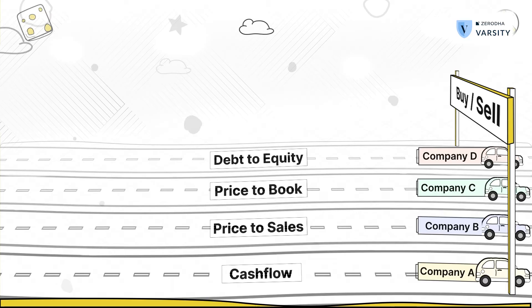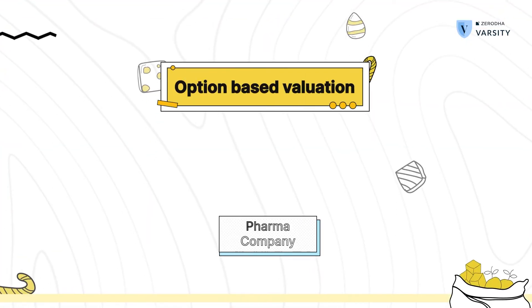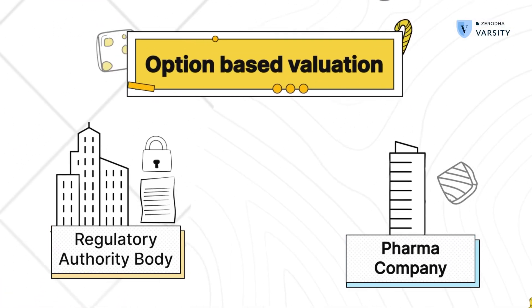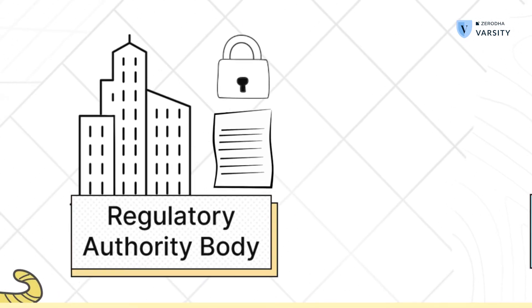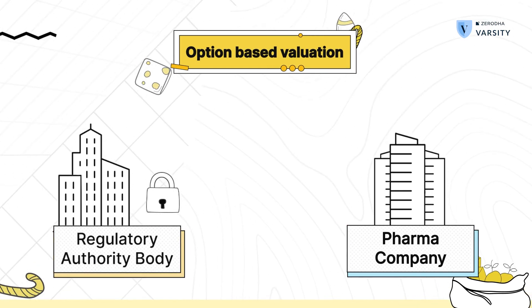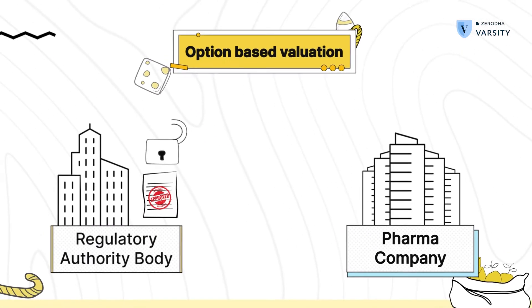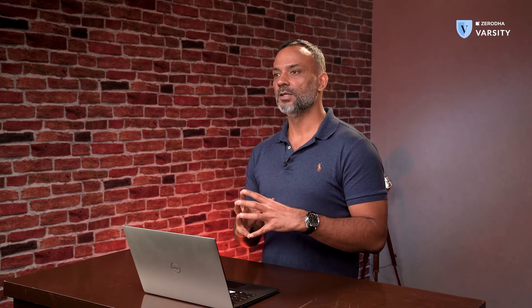By doing so you can arrive at a buy or sell decision based on how cheap or expensive the stock is trading. The third technique — relatively new in the industry — is option-based valuation, where the value of a company is contingent upon an event. For example, a pharma company that has applied for a patent: the value is unlocked only if the patent is approved.